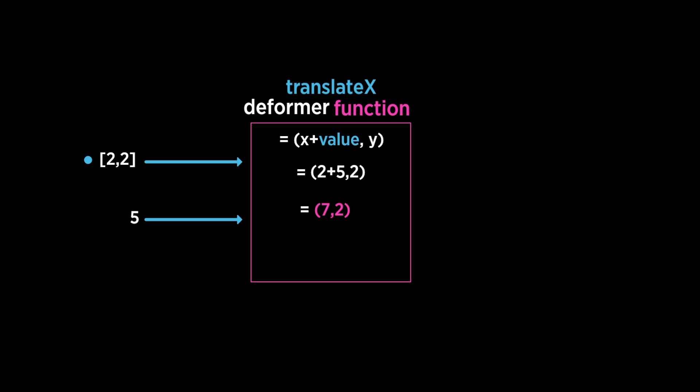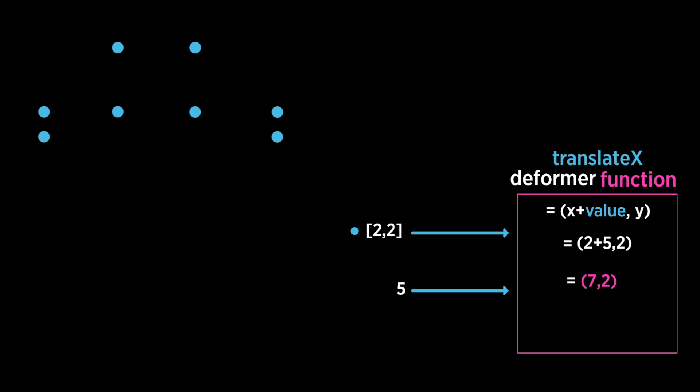and that's the process for transforming each vertex in a shape. Of course, our shapes contain many vertices. For example, our hat has 8, and that means this function is run 8 times, once for each vertex.